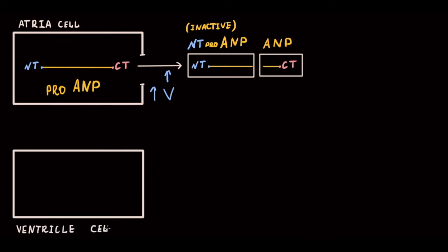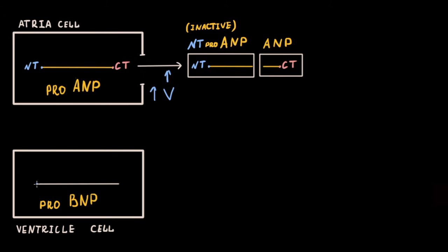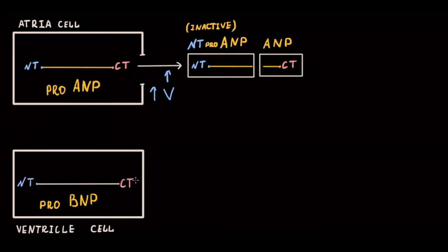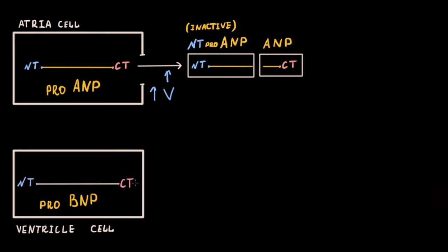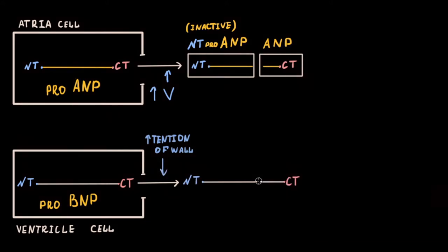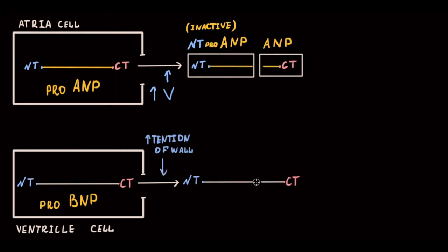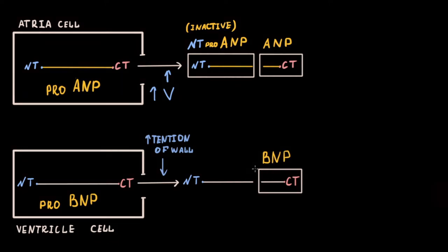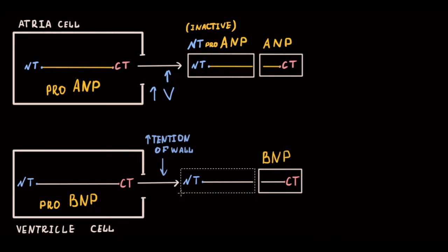In the ventricles, BNP is stored in an active pro-BNP form, and also has two terminals: C and N. Pro-BNP is released in response to increased ventricular wall tension and cleaves into two parts. The C-terminal fragment is active BNP, and the N-terminal pro-BNP is the inactive one.